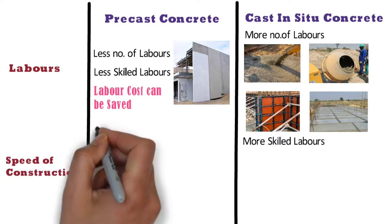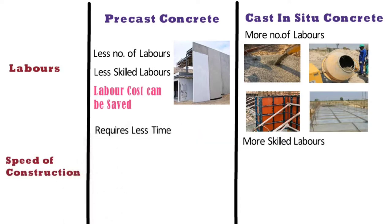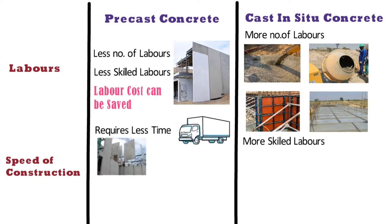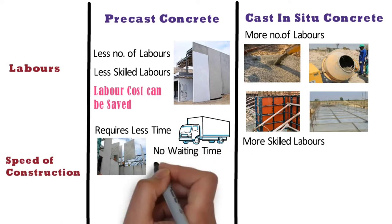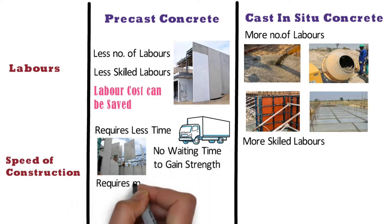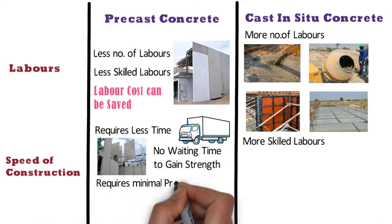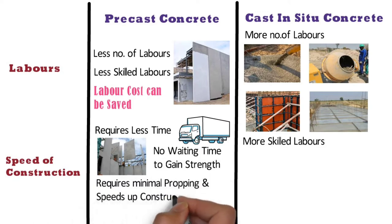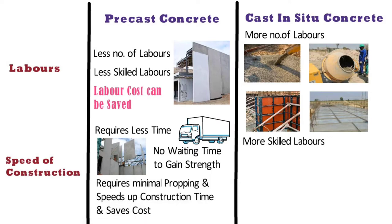Precast concrete method requires less time for on-site construction as compared to cast in situ concrete method, because precast members are transported to site and can be directly lifted and placed in the desired position, with no waiting for them to gain strength. It requires minimal propping and bracing, hence it speeds up construction time and saves cost.